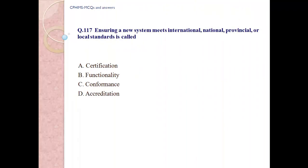Question number 117. Ensuring a new system meets international, national, and provincial or local standards is called: A) Certification, B) Functionality, C) Conformance, D) Accreditation. Answer: C, conformance.